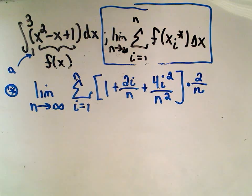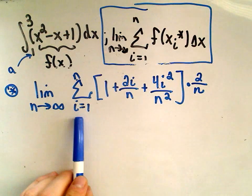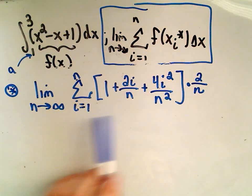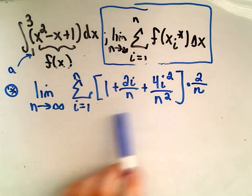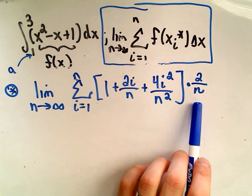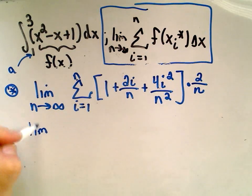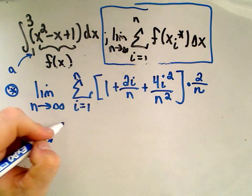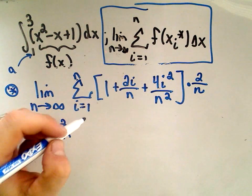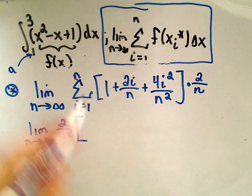Okay, so in this problem, our index starts at i. Anything that has an i has to stay to the right of the summation. Well, this 2 over n, usually what I like to do in this case, is I just pull it out front. And again, you don't have to do this at all. This is my own personal preference.